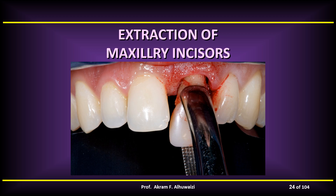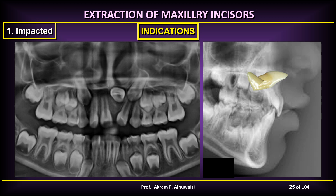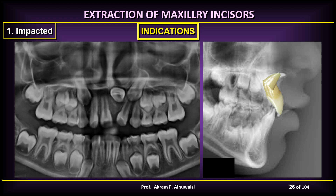Extraction of maxillary incisors, especially the upper central incisor, is rarely done as part of orthodontic therapy. However, there are indications: one is an unfavorably impacted maxillary central incisor, especially when it is dilacerated. When you try to correct it, you still end up with the apex of the root poking out of the labial bone, and that's why they have to be extracted. Some incisors are hook-shaped, and these roots make traction orthodontically extremely difficult or even impossible.